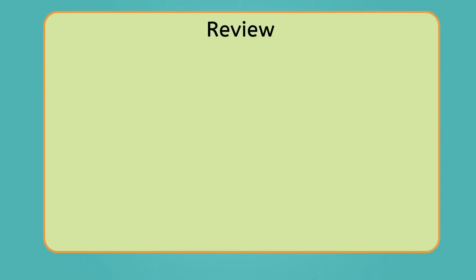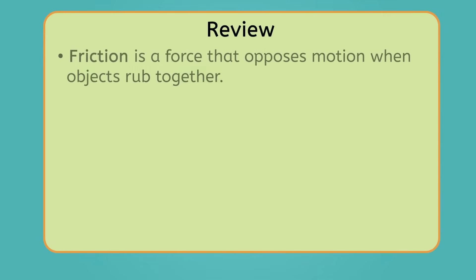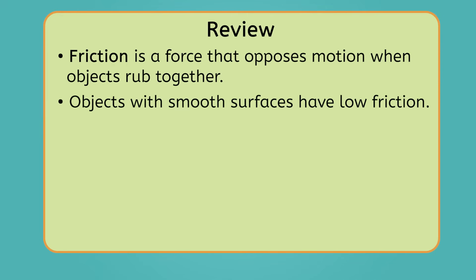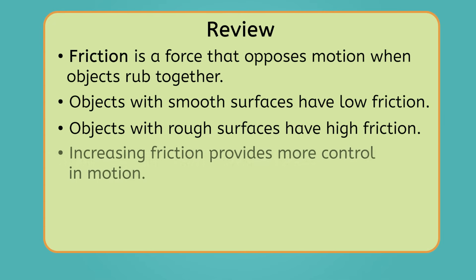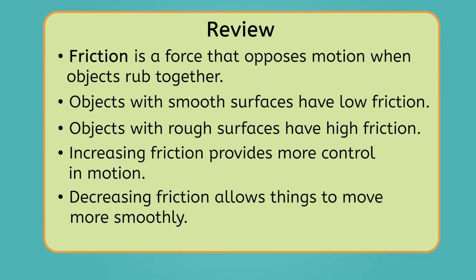Before I strap on my skates, let's review everything we've learned about friction today. Friction is a force that opposes motion when objects rub together. Objects with smooth surfaces have less friction, and objects with rough surfaces have more friction. We can increase the amount of friction in the objects around us when we need more control, and we can decrease it when we need things to move more smoothly.